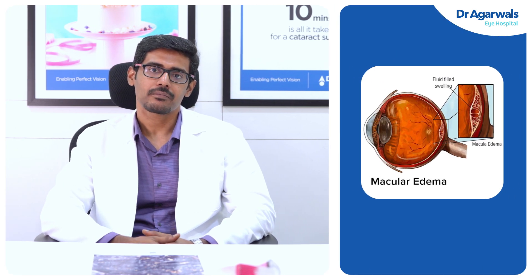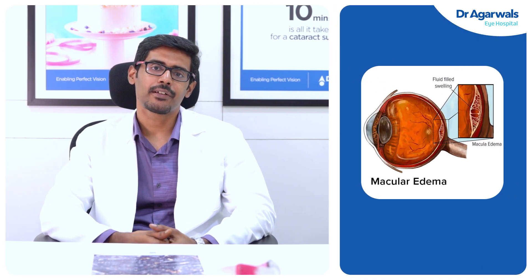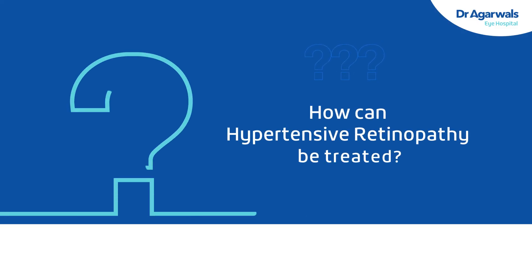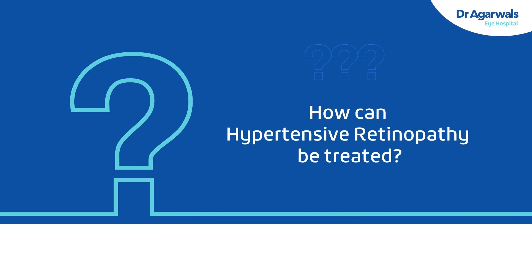Usually these vein occlusions will be accompanied by something called macular edema, which means the central part of the retina tends to get swollen up because of the leakage of fluid. This can usually be treated with three lines of treatment, which can be intravitreal injections — basically these are retinal injections.